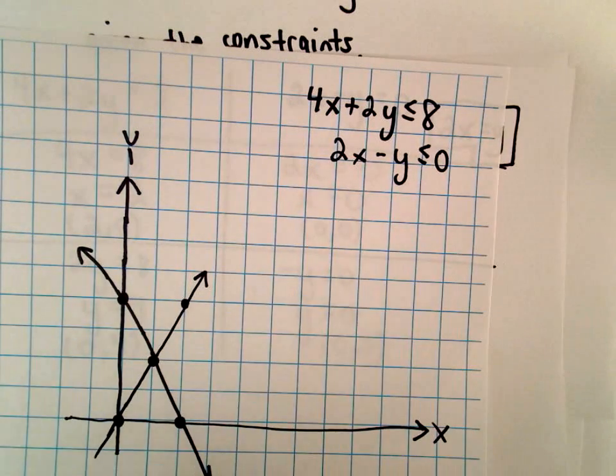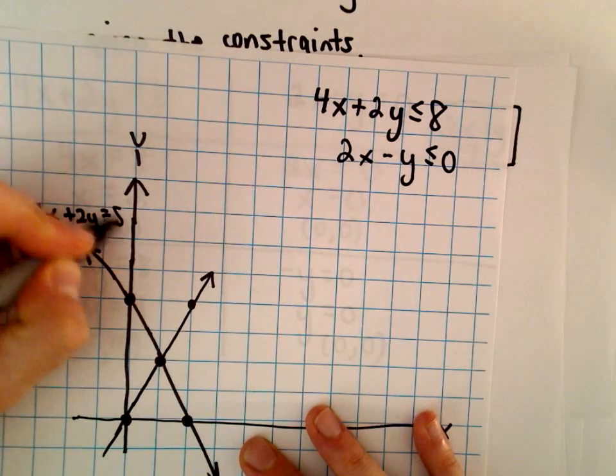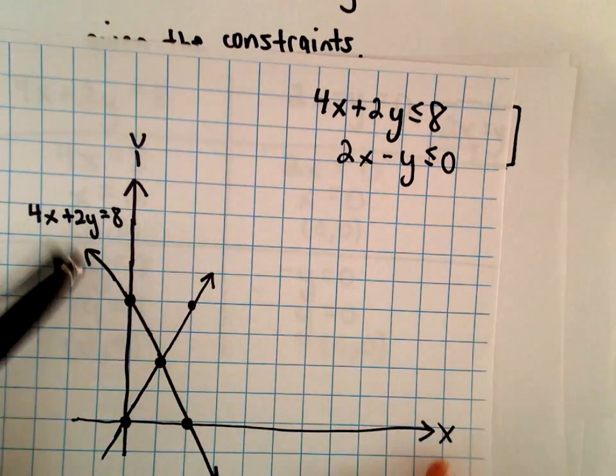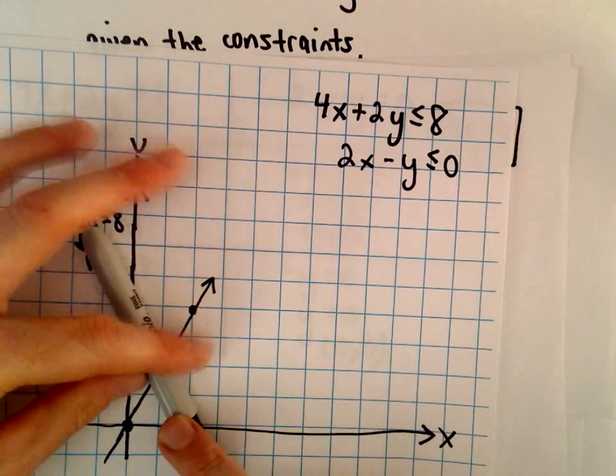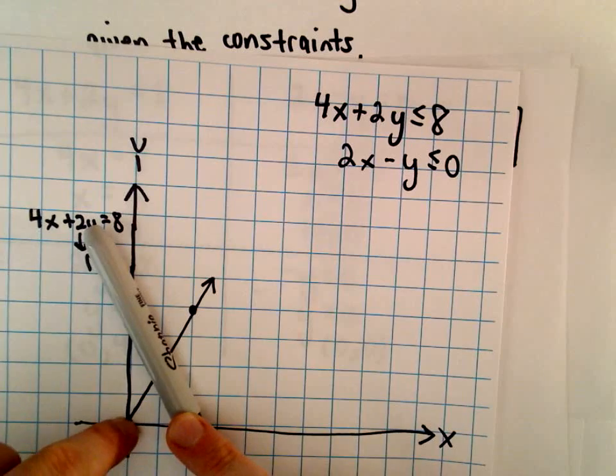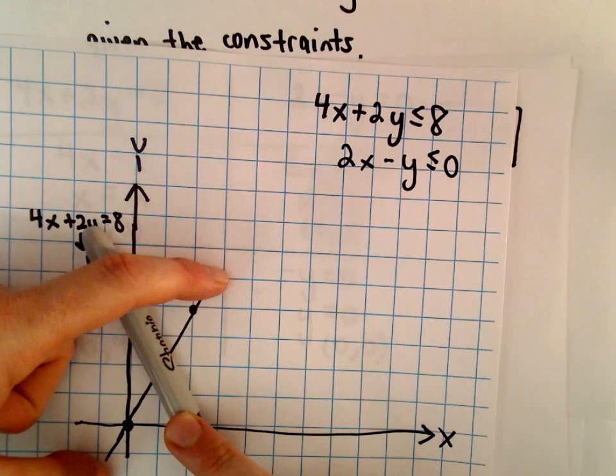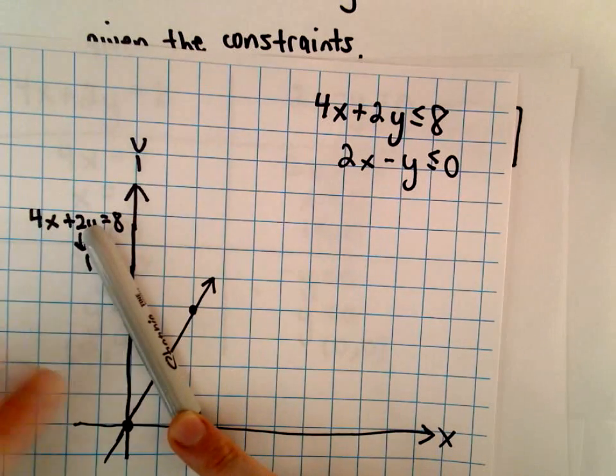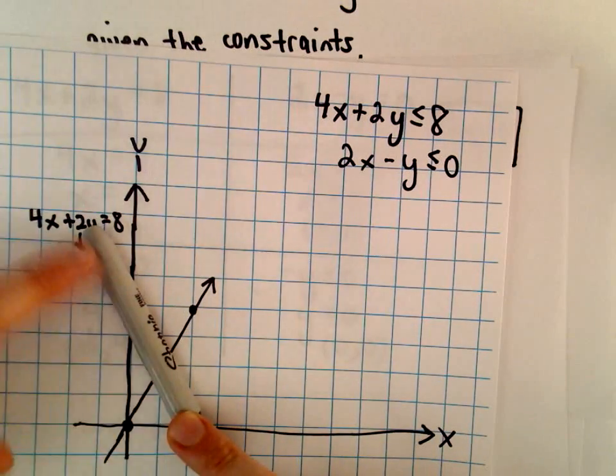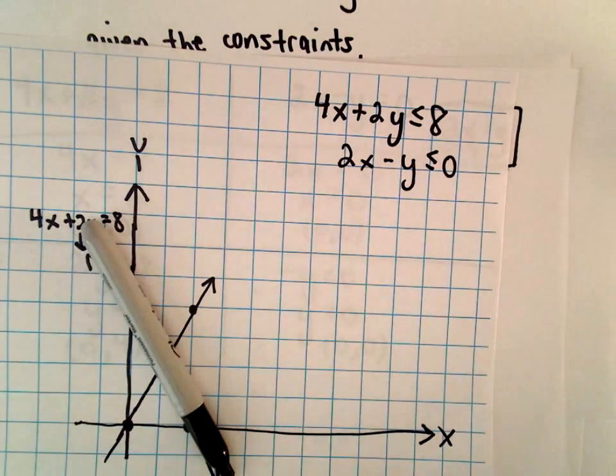So for my line 4x plus 2y equals 8, to test the inequality I'm going to use a point not on that line. And I'm just going to use the origin, 0, 0. Again, the other line does go through 0, 0, but you can almost forget about that line for a second. So as long as I take a point off of the line 4x plus 2y equals 8, I can use that as a test point.